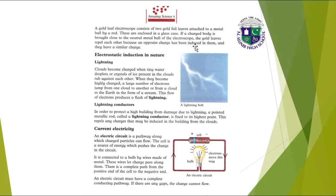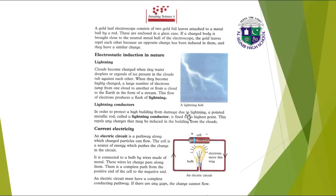An opposite charge has been induced in the gold leaves and they have a similar charge to each other. Electrostatic induction in nature — lightning: clouds become charged when tiny water droplets or crystals of ice in the clouds rub against each other. When they become highly charged, a large number of electrons jump from one cloud to another or to the earth, forming a stream. This flow of electrons produces a flash of lightning, as shown in this picture.